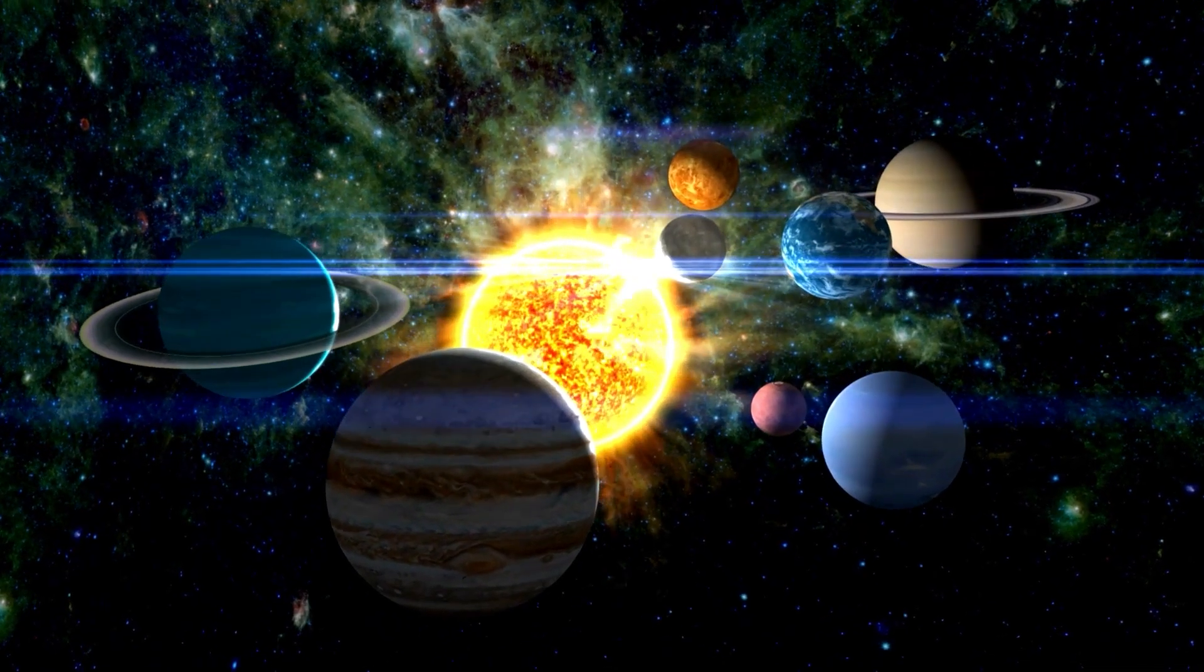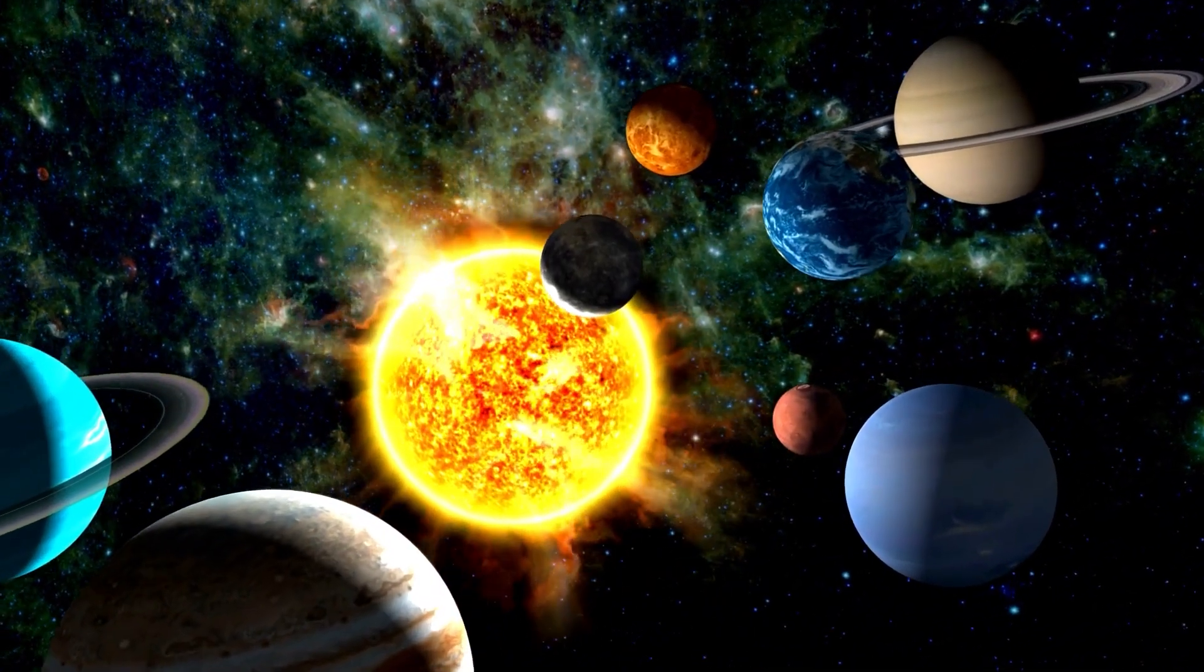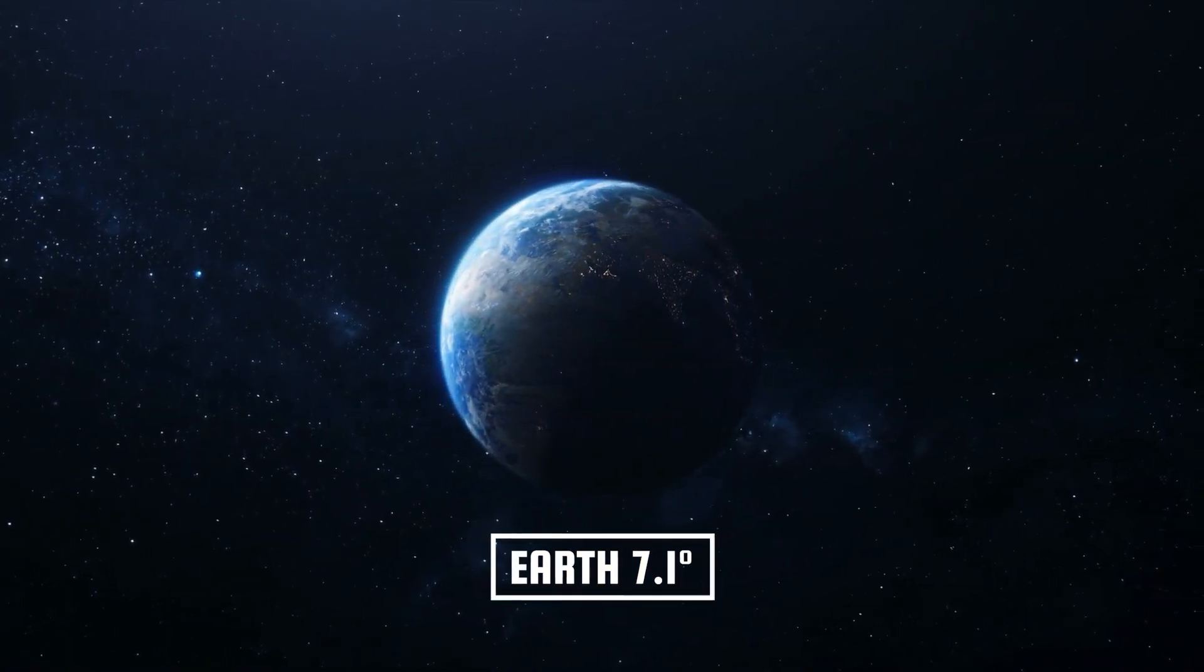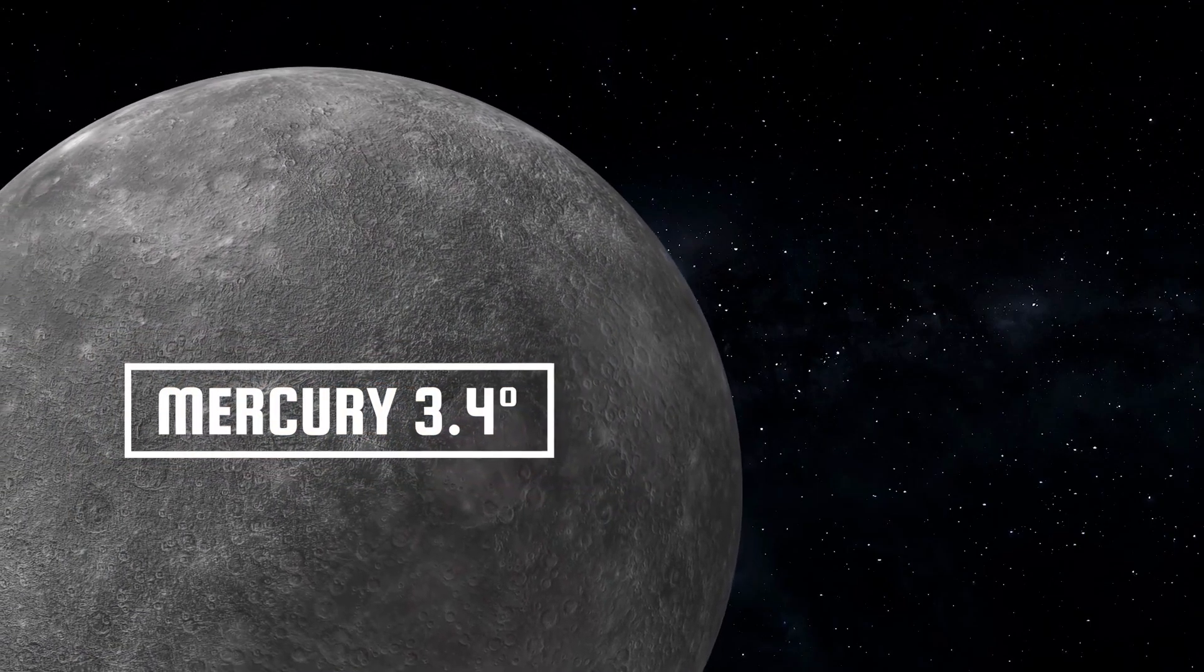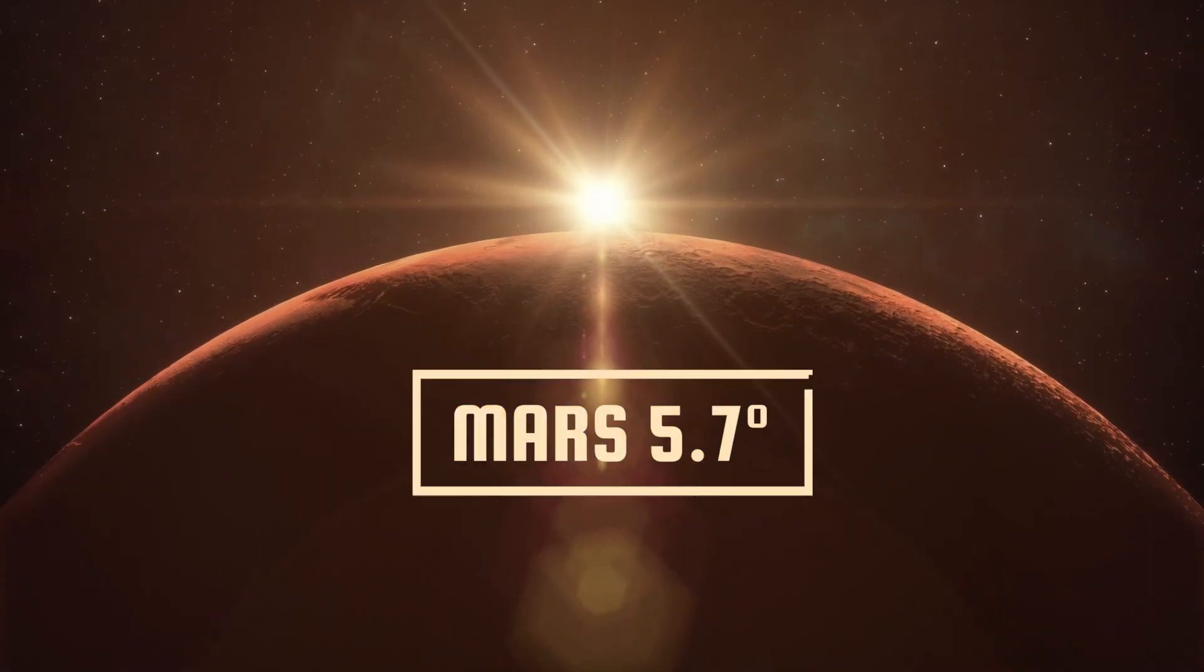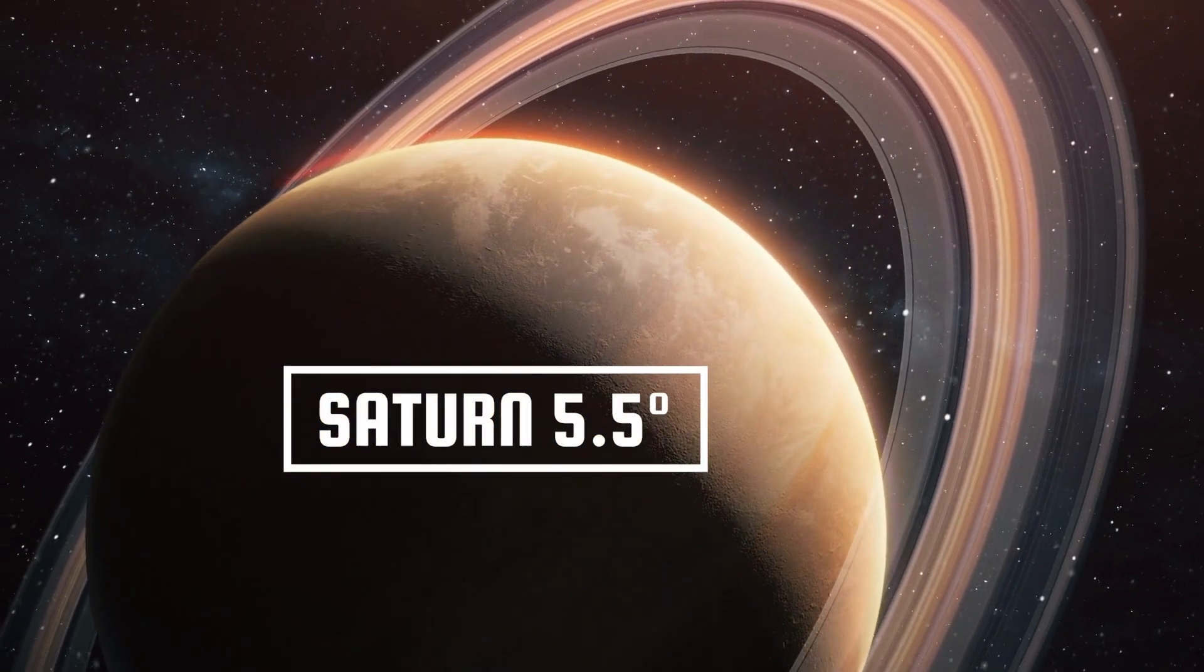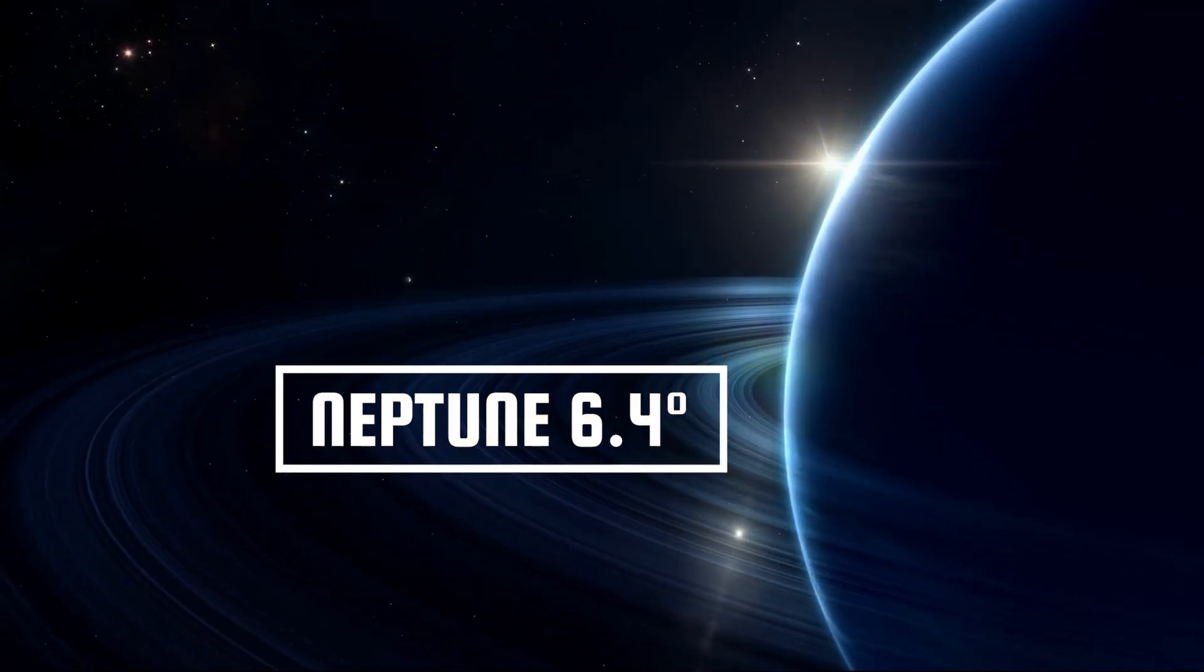If the inclinations of the orbits were calculated with respect to the equatorial plane of the Sun, then everything would change. Earth's orbital plane would become the most inclined with 7.1 degrees, Mercury would be 3.4 degrees, Venus 3.9 degrees, Mars 5.7 degrees, Jupiter 6.1 degrees, Saturn's 5.5 degrees, Uranus's 6.5 degrees, and Neptune's 6.4 degrees. Really strange, isn't it?